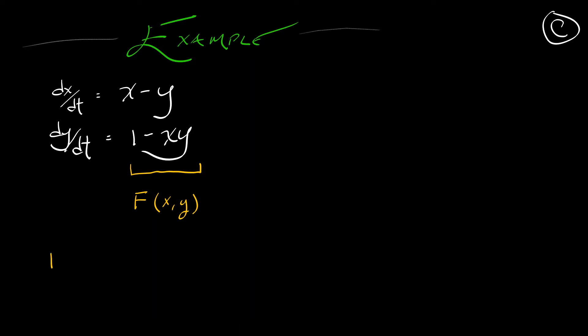If we compute the derivative of that, it is represented as the 2x2 matrix with columns, the partials in x, that is 1 and negative y, then the partials in y, negative 1 and negative x. We have to evaluate this derivative at the equilibria.